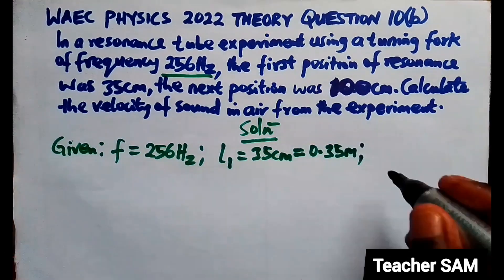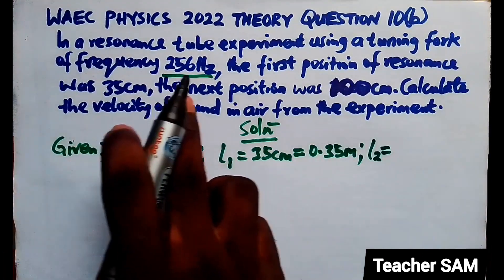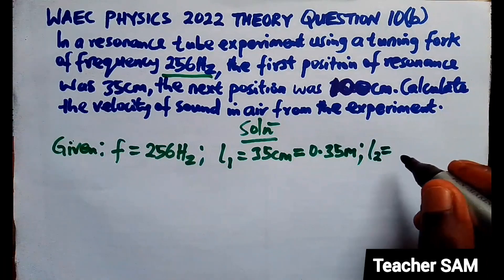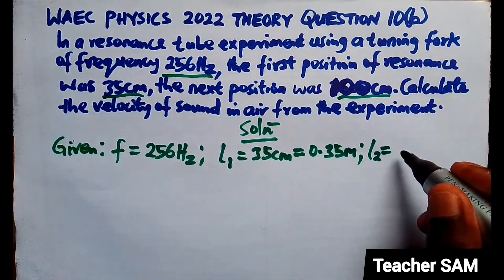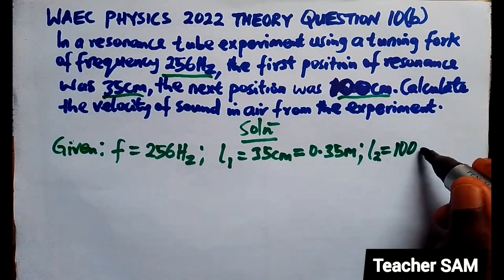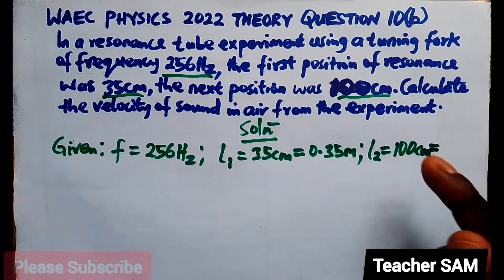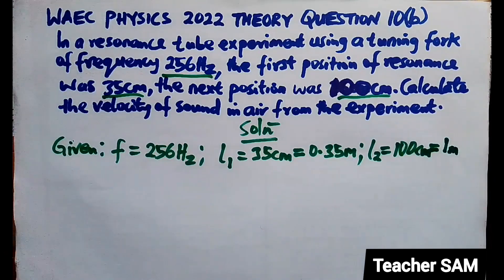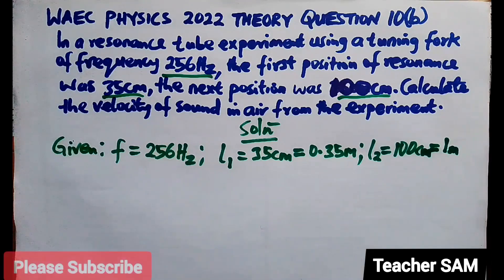L2, the next position of resonance, is 100 cm. Dividing by 100 to convert to meters, that gives us 1 meter. So this is what we are given according to the equation.